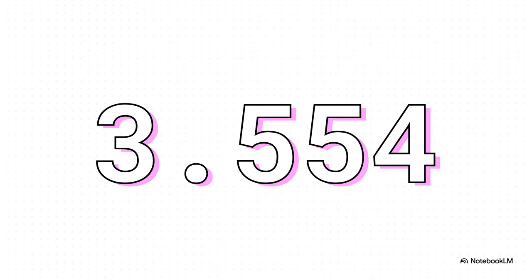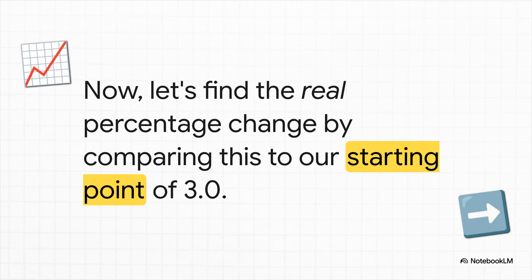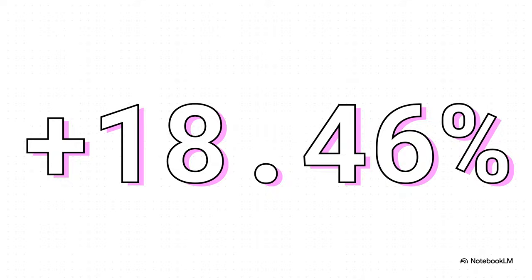Now, you might be looking at that and thinking, okay, that's not that different from 3.5. And you're right. It doesn't seem like a huge jump. But the real story emerges when we look at the change over the entire year. So for our last step, let's compare this new real rate of 3.554 to where we started at 3.0 and find out the true percentage change. And there it is. The real change was 18.46%. That's almost two full percentage points higher than what the simple nominal rate told us.